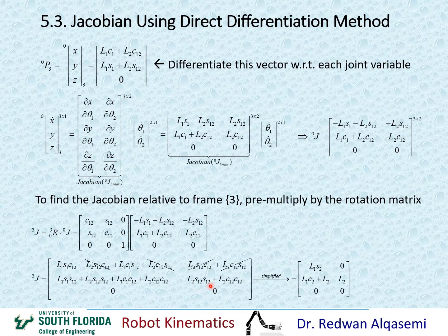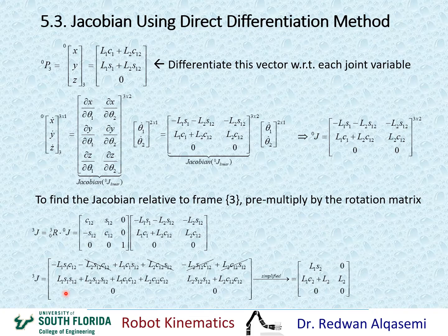This is actually straightforward — it's S12² + C12², so the common factor is L2 times (S2² + C2²) which equals 1, leaving only L2. The zeros stay as they are. So now we have the Jacobian relative to frame 3, which is the linear Jacobian relative to frame 3.